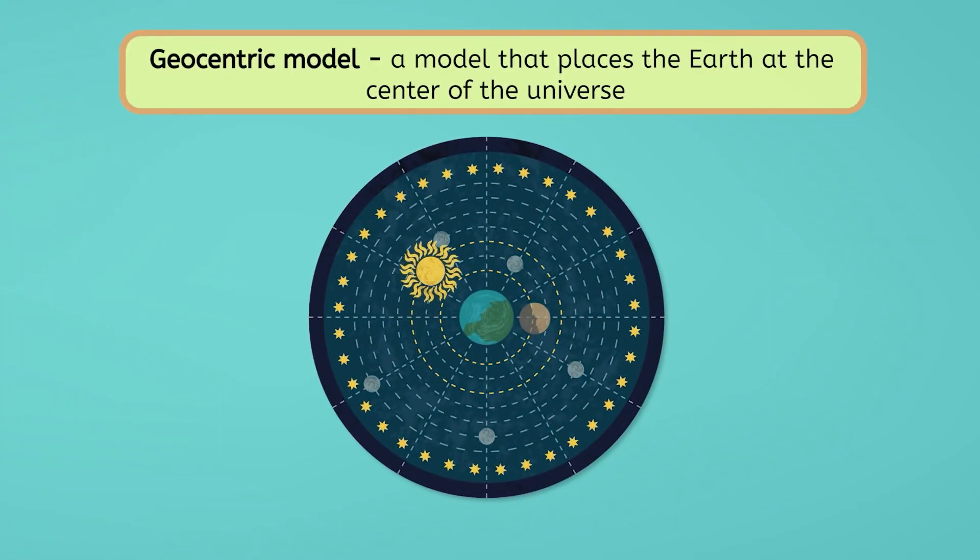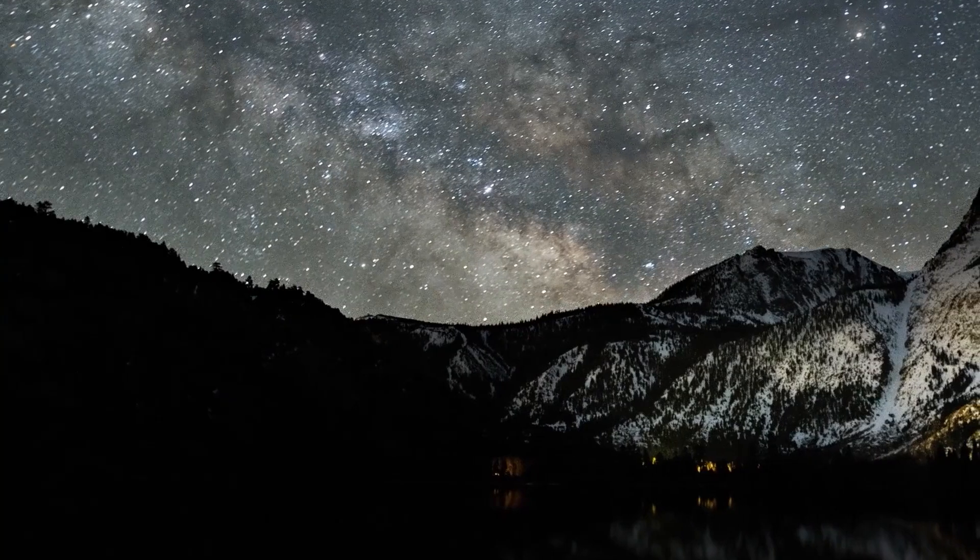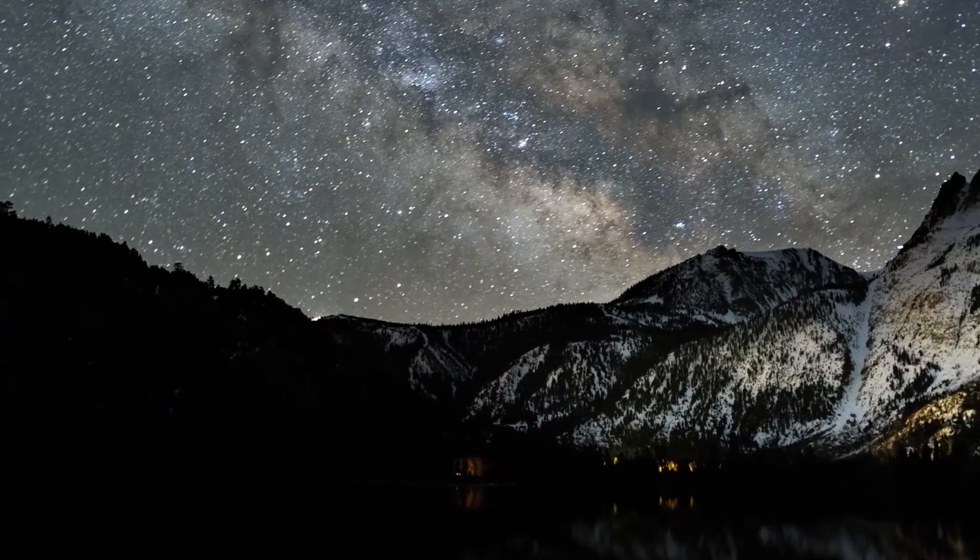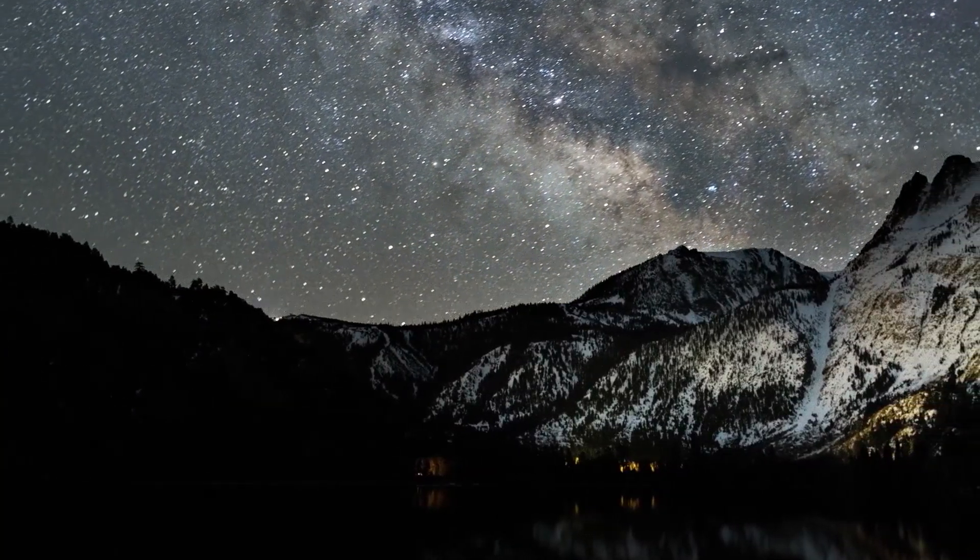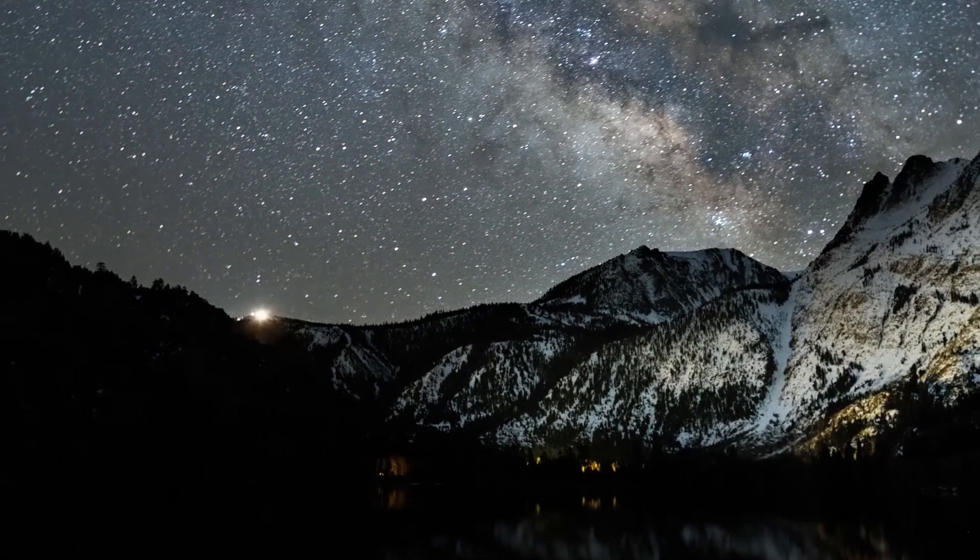This idea is called a geocentric model. Aristotle's geocentric model suggested the Earth stayed still while the Moon, Sun, planets, and stars moved in perfect circles around it. The geocentric model made sense to people. After all, it does look like the Sun, Moon, and stars are all moving around us here on Earth.